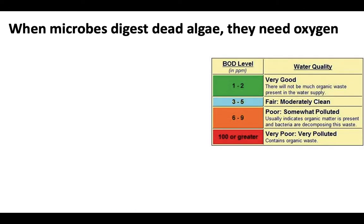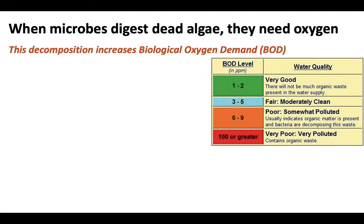When microbes are digesting dead algae in a eutrophic ecosystem, they need oxygen. Decomposition is a combustion reaction — a lot like cellular respiration — and it increases biological oxygen demand. When BOD is low, water quality is very good. As BOD increases, the water becomes more and more polluted, because there's more and more organic waste present and less and less oxygen for organisms to utilize.